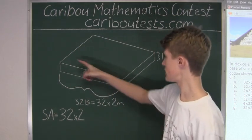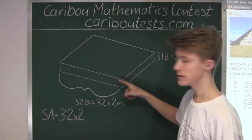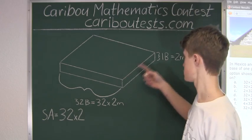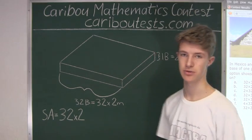So we know that this is 32 times 2 and then since this has the same length this must also be times 32 times 2.